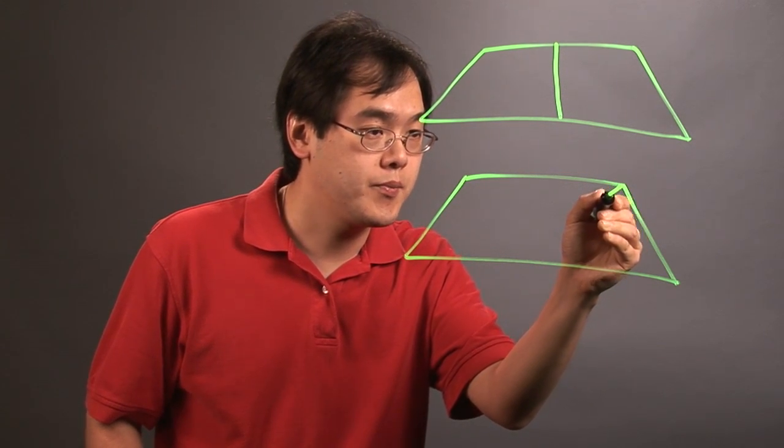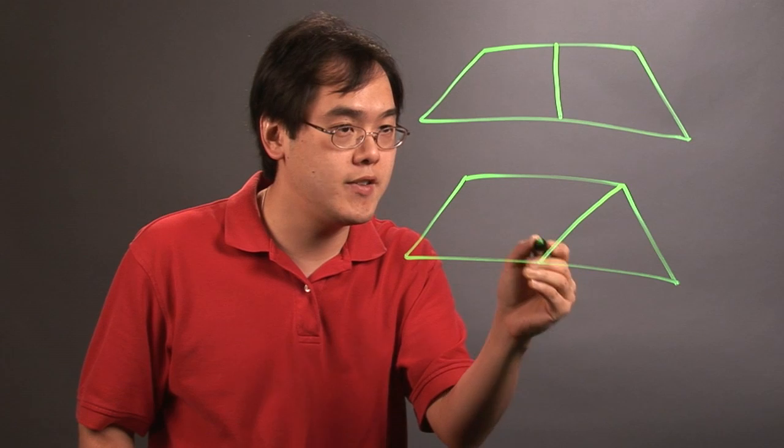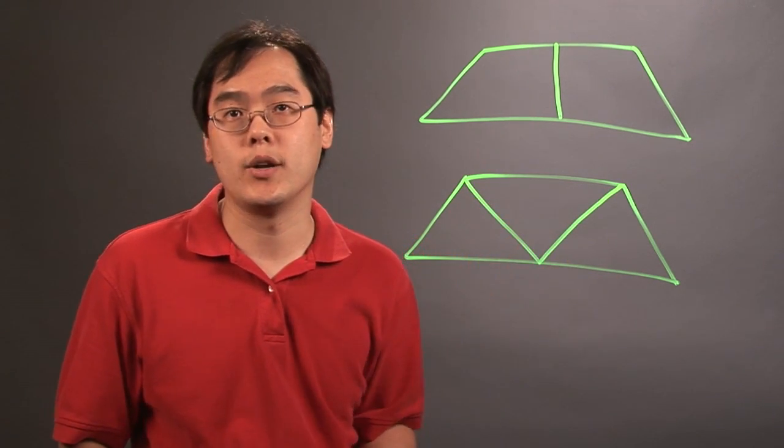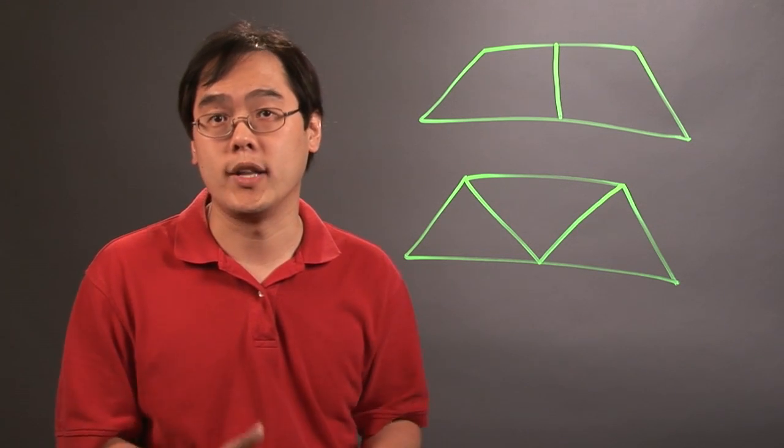And again, these are rough sketches. So this would be one division, and then the other division would be here. And as you can tell, you have one, two, three triangles that, again, if you draw it correctly, will be equal.